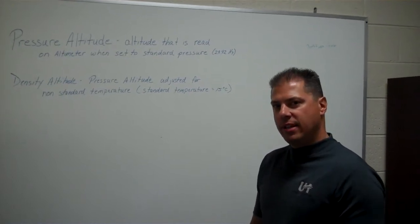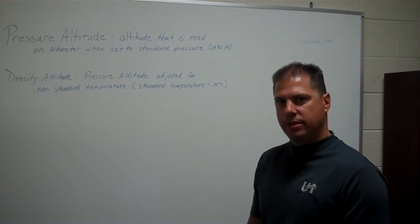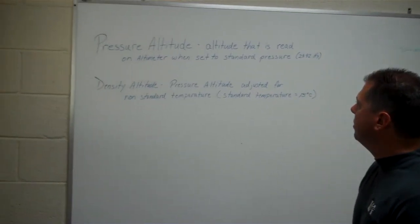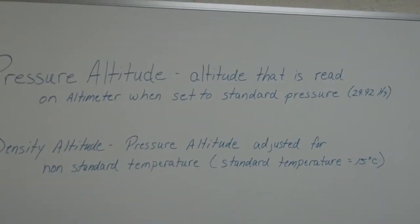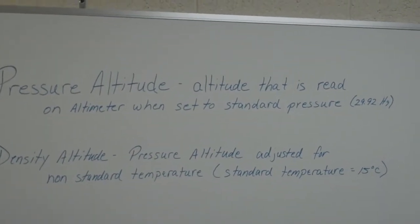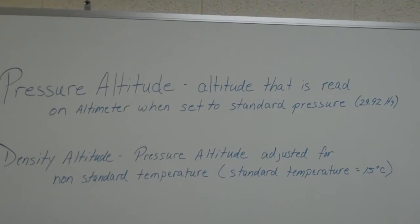Before we understand density altitude, we need to know what pressure altitude is. Pressure altitude is what is read on your altimeter when it's set to standard pressure, which is 29.92 inches of mercury.